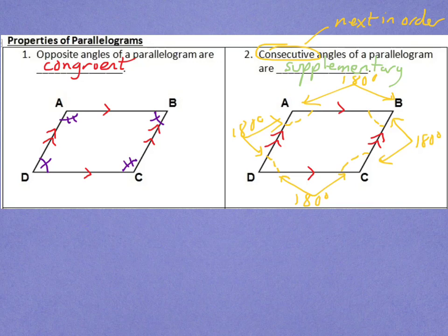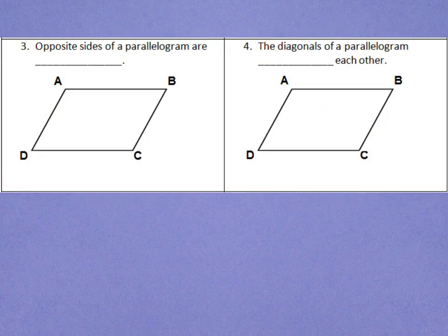Let's look at some properties about segments and sides. Our third property of a parallelogram is that opposite sides of a parallelogram are congruent. That is to say that side AB and side CD are congruent, and side BC and side AD are congruent.